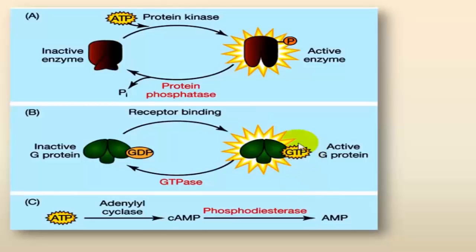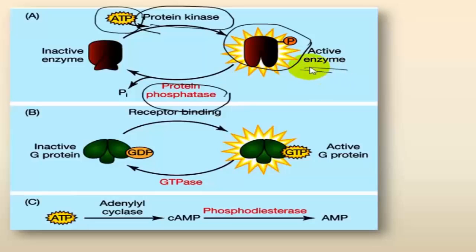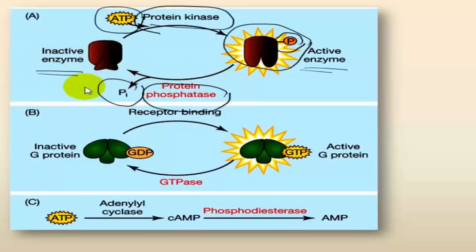One mechanism of deactivation uses protein phosphatases. Cyclic AMP activates protein kinase, which transfers a phosphate from ATP to a protein, raising its potential energy and causing it to become active. Phosphatases deactivate this pathway by removing a phosphate from the protein and releasing it as inorganic phosphate, thereby deactivating the enzyme.